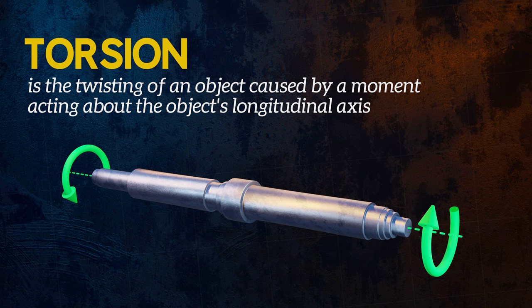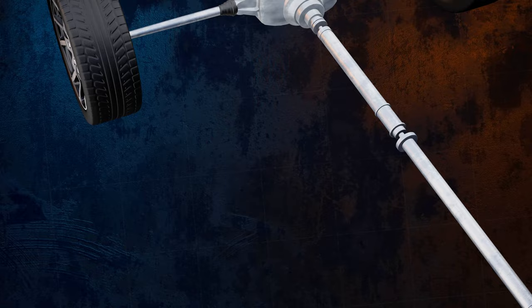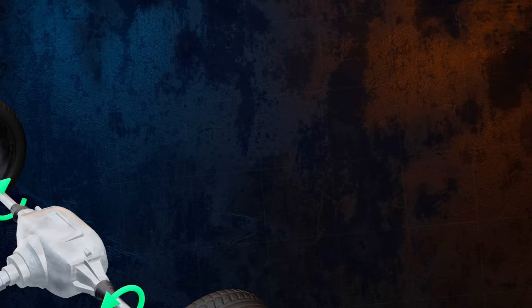A moment which tends to cause twisting is called torque. A common example of an object subjected to torsion is the transmission shaft, which is used to transmit power by rotation. This could be the drive shaft and axles used to transmit power from the engine of a car to the wheels, for example, or the shafts used to transmit power from the blades of a wind turbine to its generators.